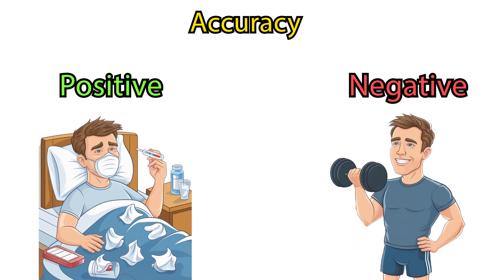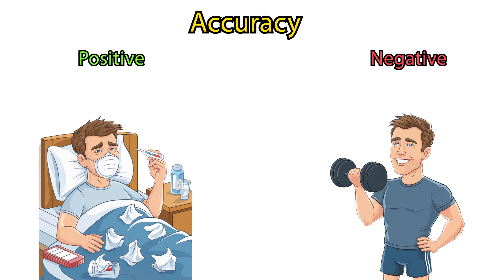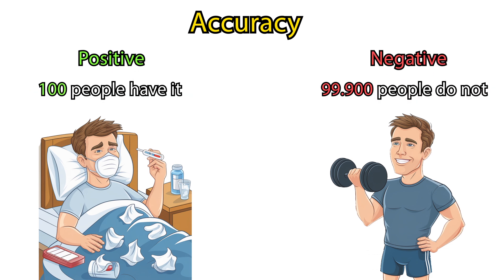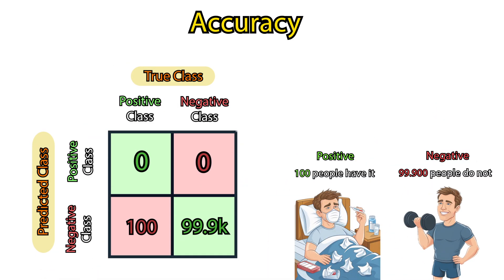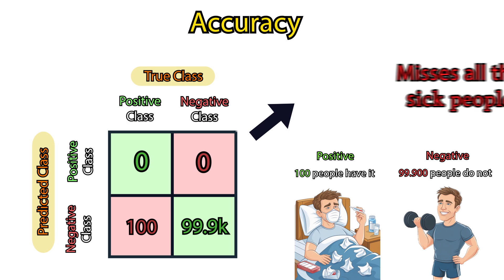Let's say if a person has a certain flu, we predict positive, if not then negative. The flu is very rare and of 100,000 people, only 100 have it. Our model learned to classify all observations to the negative class, meaning none of them has the flu.